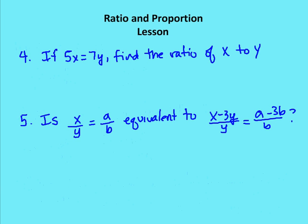If 5x equals 7y, find the ratio of x to y. This is a common standardized test problem. Many students think the answer is 5 to 7, but it's actually 7 to 5. We set up a proportion using 5x equals 7y, and applying the means extremes product theorem gives us 7 times y equals 5 times x. Rearranging, the ratio of x to y is 7 to 5.